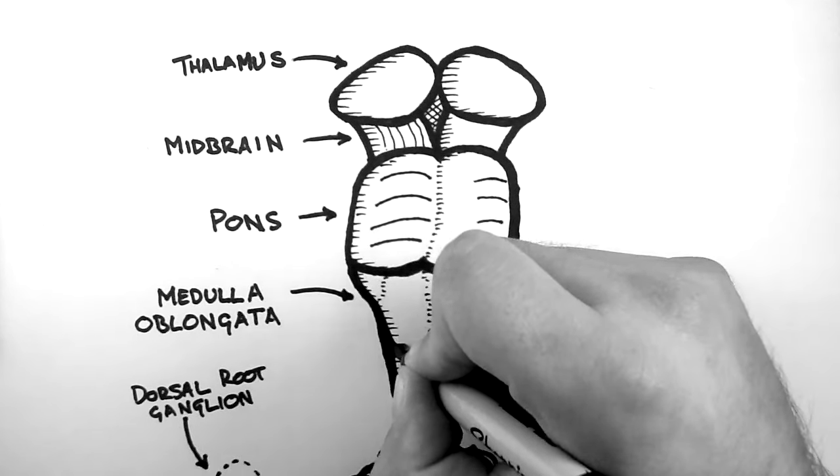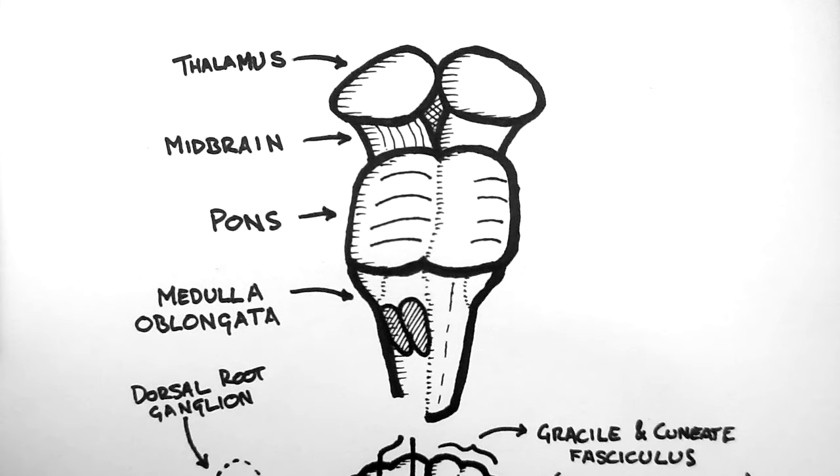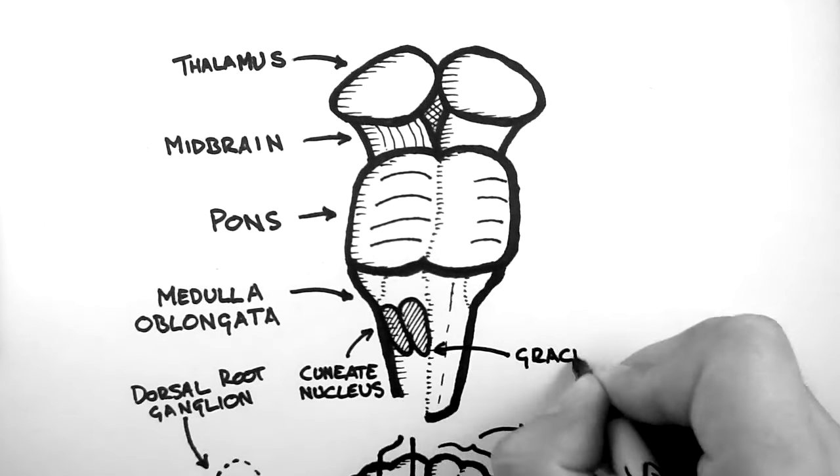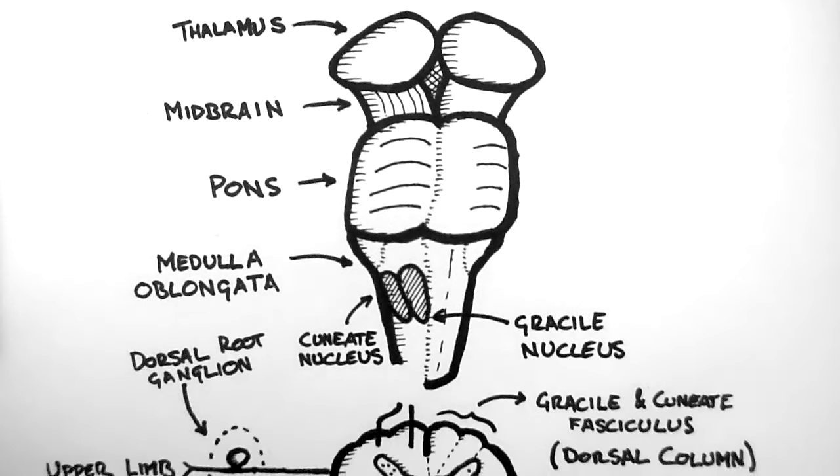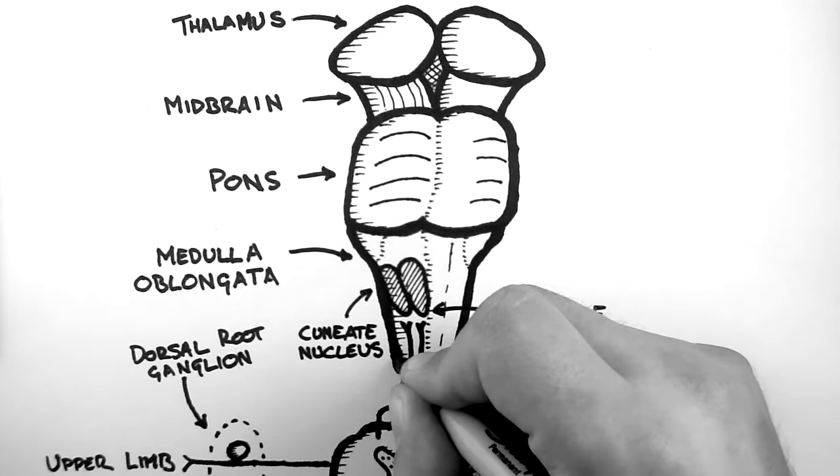In the medulla there are two nuclei which are the targets for the dorsal column. A nucleus is a discrete collection of cell bodies within the central nervous system. These two are named the cuneate nucleus and the gracile nucleus. And the cuneate fasciculus and the gracile fasciculus project to each respectively.